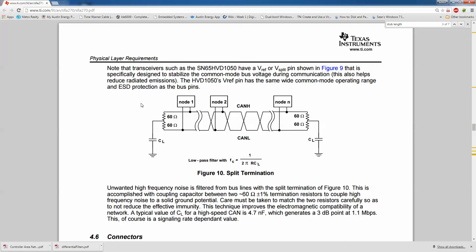But in this application note, R is not clear to define what R is, but they did give us an example where CL is given, that's 4.7 nF and they say the corner is at 1.1 MHz. So that's implying an R value of 30 ohms.